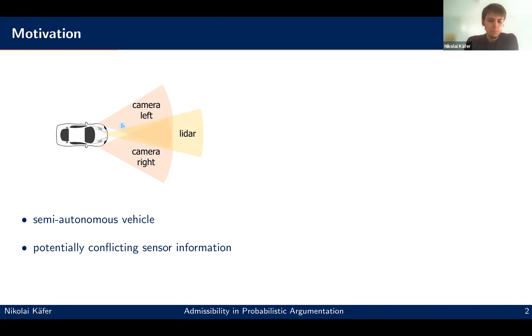So as an example, maybe also a bit of motivation, why one might consider probabilistic argumentation, we have a look here at some semi-autonomous vehicle which is equipped here with a number of sensors, have a left camera, right camera, and a long distance LIDAR sensor. And with these sensors, they detect if there's an obstacle on the left, the right, or in the middle. And then, of course, we want to decide whether we should continue or stop.